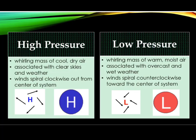Variations in pressure caused by whirling masses of air also contribute to weather. A high pressure system, represented by an H, is a whirling mass of cool, dry air. It's usually associated with clear skies and weather. Winds spiral clockwise out from the center of a high pressure system. A low pressure system is made of a whirling mass of warm, moist air, and is represented by an L. It's typically associated with overcast and wet weather. The winds spiral counterclockwise toward the center of a low pressure system.